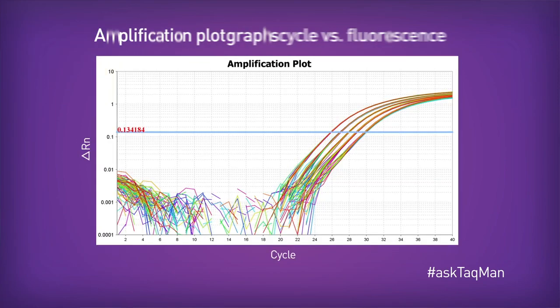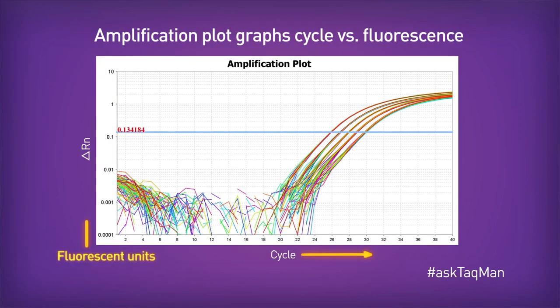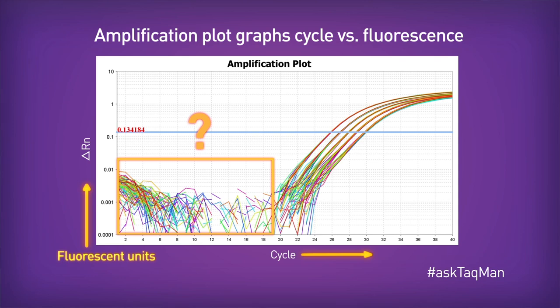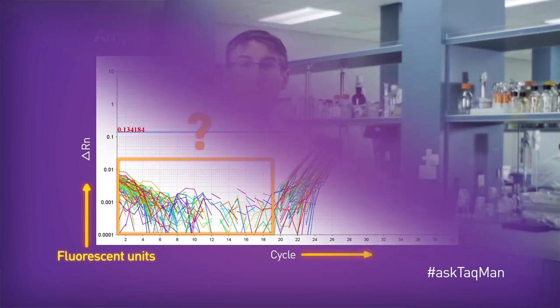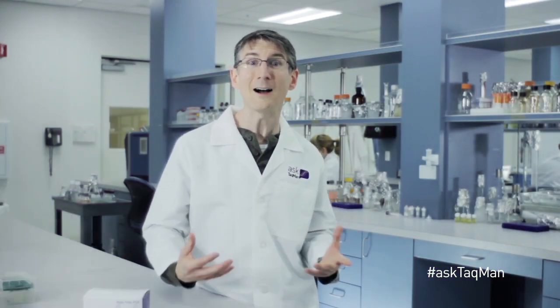Here, we're looking at a fairly standard real-time amplification plot. We have some nice curves, each of which has the familiar geometric phase, linear phase, and plateau phase. So far, so good. But what's all this junk in the early cycles? Well, friends, if you said junk, you were right — junk, trash, waste, detritus, garbage, otherwise known as noise. It's the stuff we see before our actual signal from amplification gets high enough to overcome that noise. And, as the rather impolite adjectives I used a second ago suggest, it's completely useless to us.